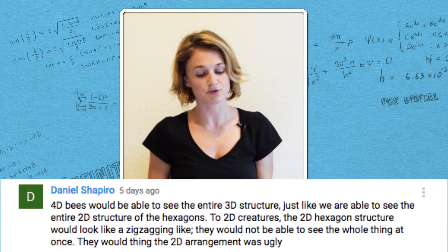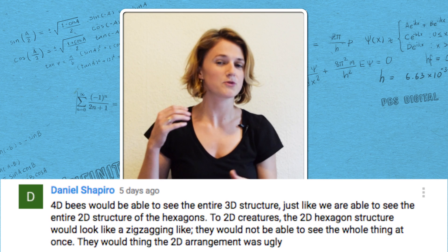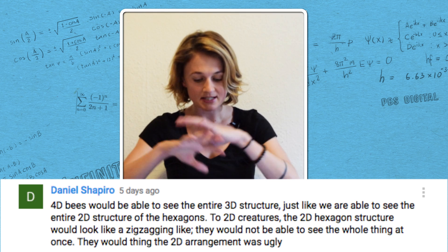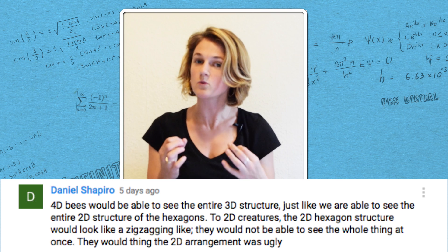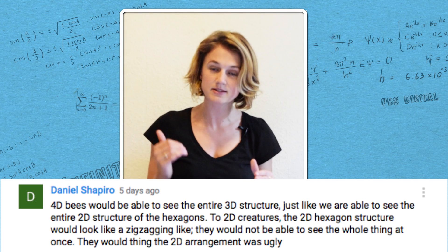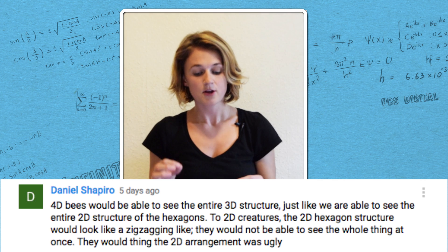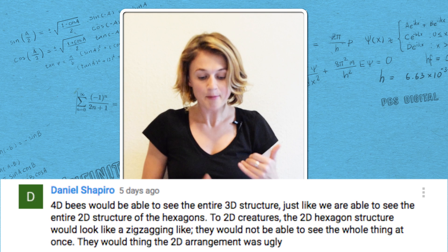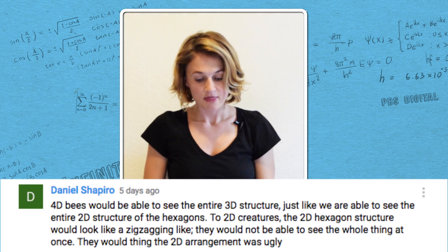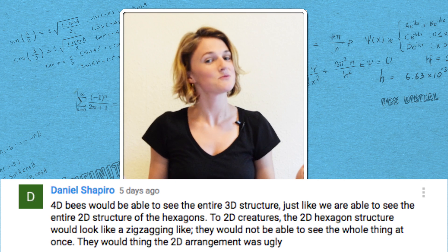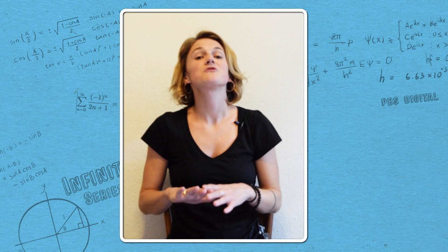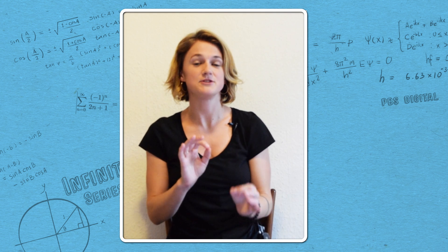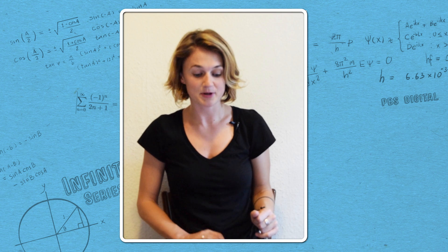But I also liked Daniel Shapiro's response, which showed a lot of intuition about the ways to think in different dimensions. So, he said 4D bees would be able to see the entire 3D structure, just like we are able to see the entire 2D structure of the hexagons. To 2D creatures, the 2D structure would just look like a zigzagging thing. They would not be able to see the whole thing at once. They would think that the 2D arrangement was ugly. So, if you haven't read the book Flatland, you should check it out. Because it's exactly the same kind of two-dimensional intuition that Daniel Shapiro is talking about.